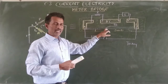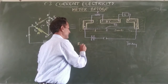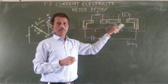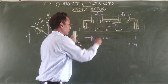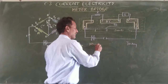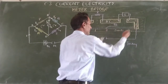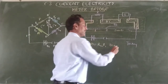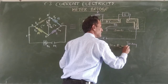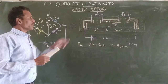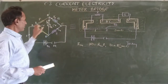If R_cm is the resistance per centimeter of this wire, since the wire is uniform, resistance per cm is a constant. Then the resistance of wire AD equals R_cm × L, and the resistance of wire DC equals R_cm × (100 − L).